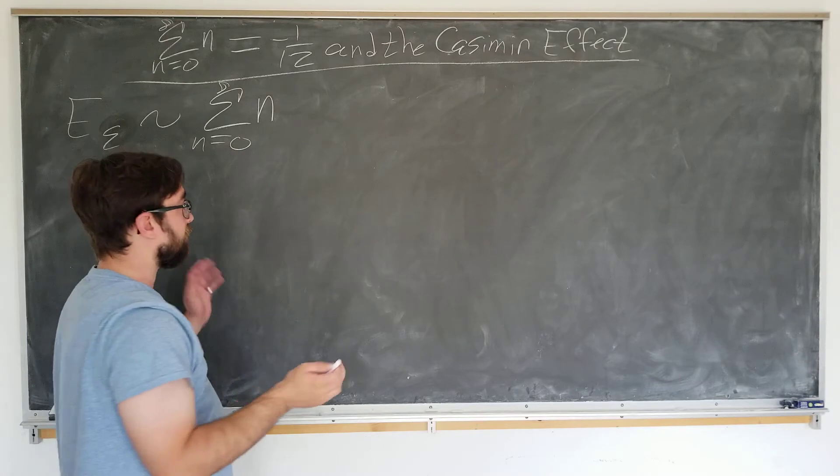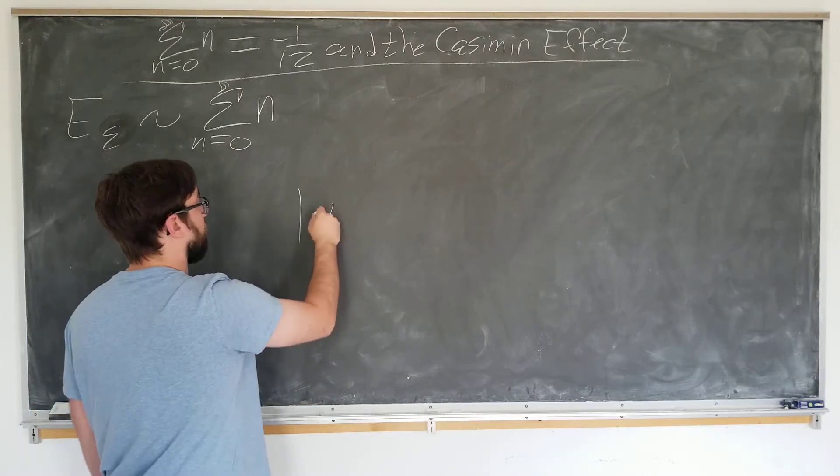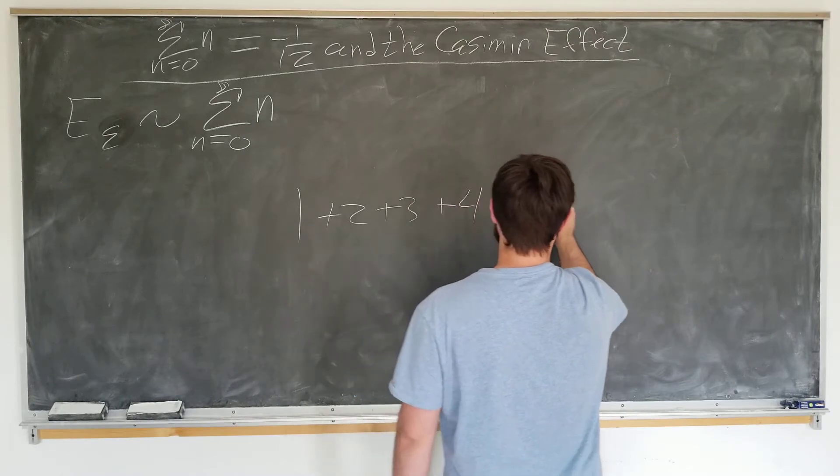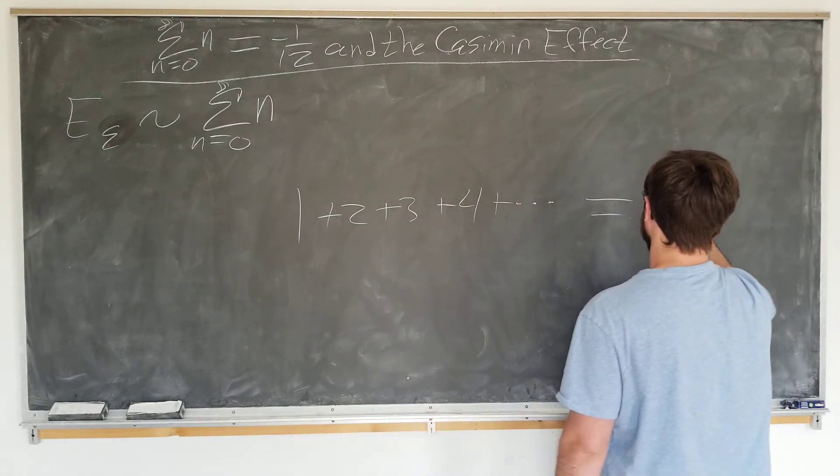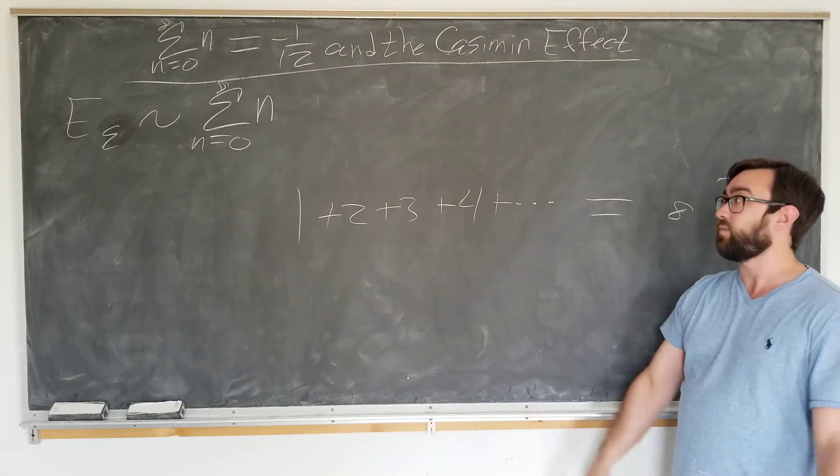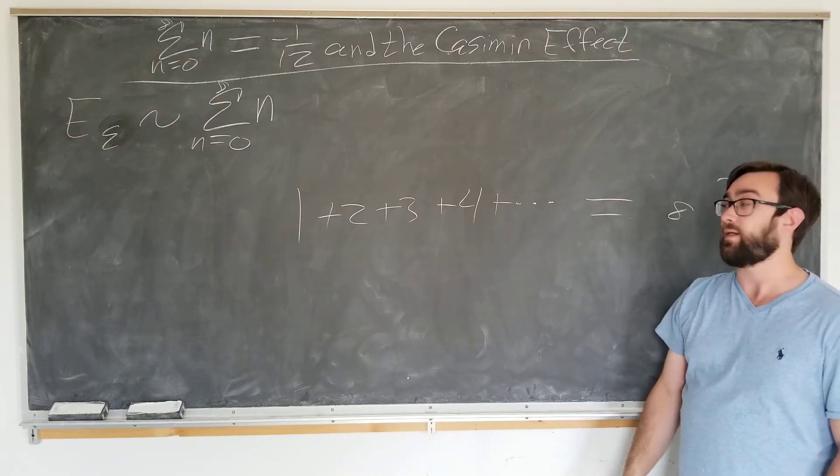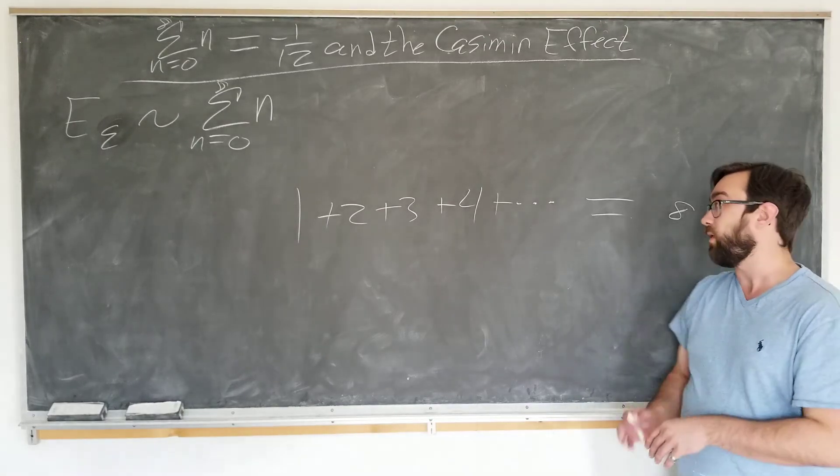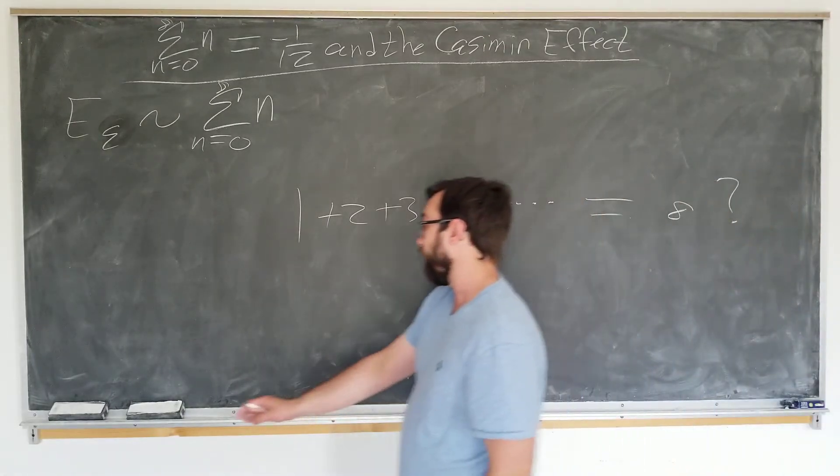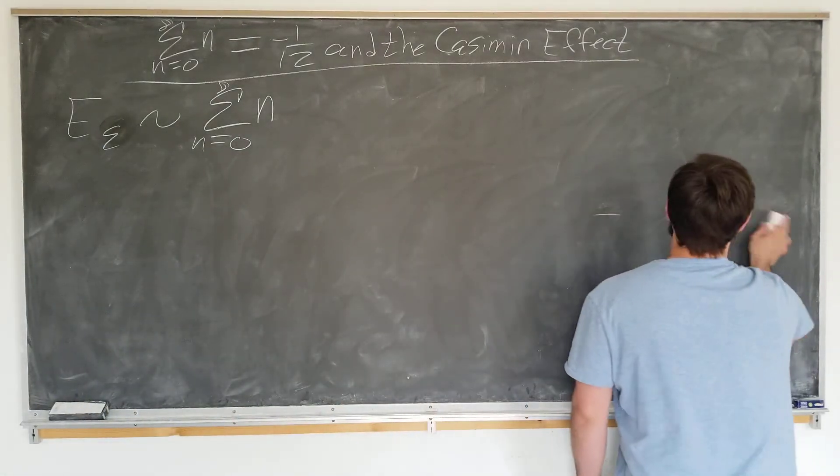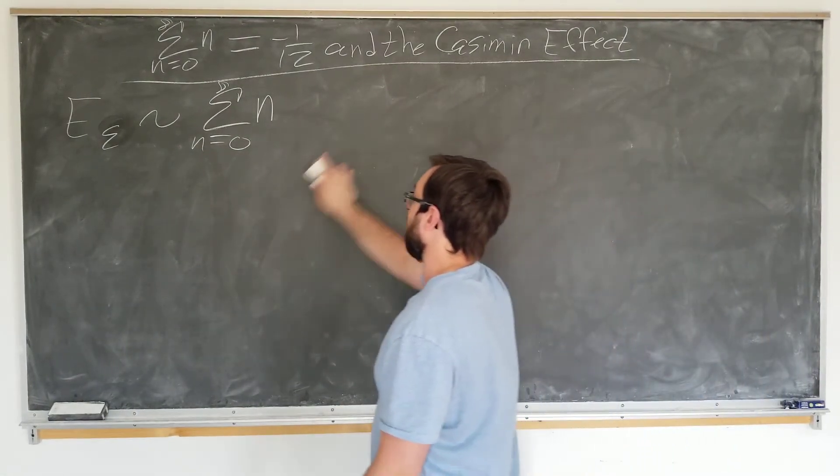But wait, this is obviously infinite, since we take one, and two, three, four, and so forth, it's obviously going to be infinity, right? Well, this can't be the case, because energies have to be finite. And in this case, it's experimentally verified to be really small anyway, so this is just no good. We have to find some way to get rid of the infinity from the calculation and obtain a small finite number.